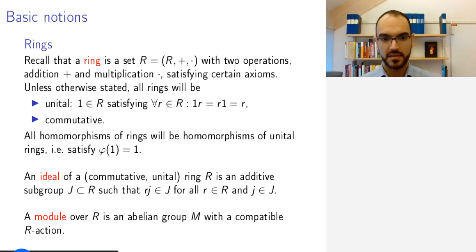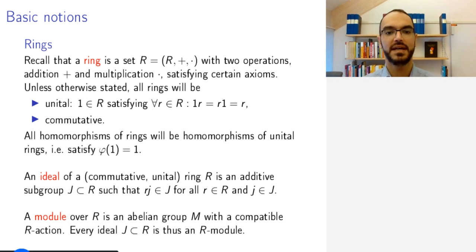Later in the course we will look at modules over rings. A module over ring is simply an abelian group with a compatible action of the ring. For example, any ideal is an R module, because the ring acts on itself by multiplication, and because we require ideals to be closed under multiplication with any element of the ring, this will make it into a module.